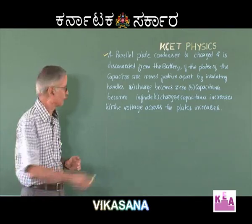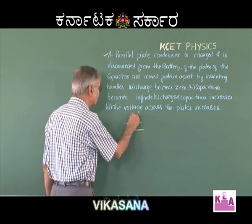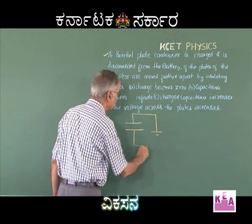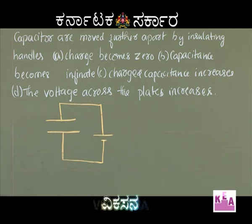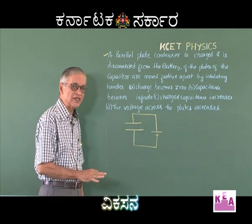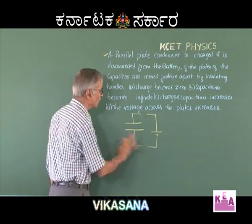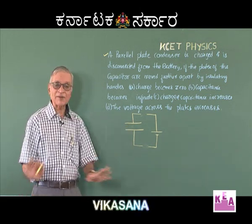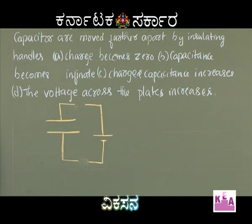Please note: suppose this is a capacitor. If you want to charge it, it should be connected to the terminals of the battery as shown here. When you connect it to the battery, the condenser will be completely charged to its full capacity. Now, after the condenser is fully charged, it is disconnected from the battery. Therefore, the charge in the capacitor will become constant — it does not change because it has already been charged to its full capacity.